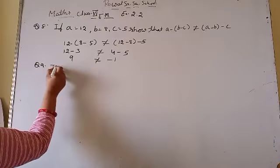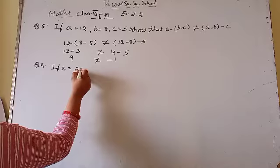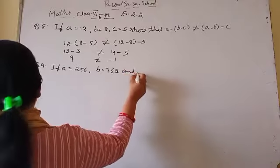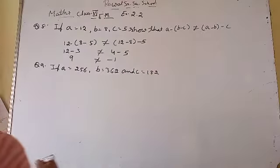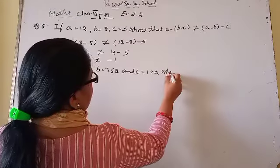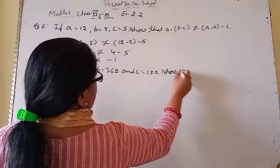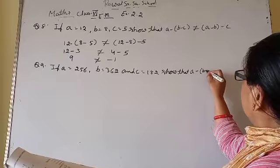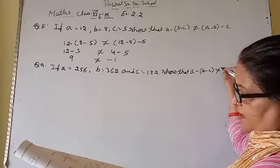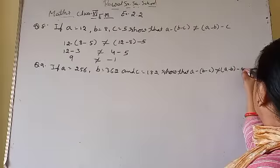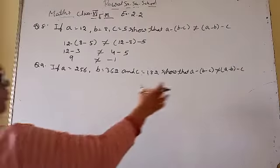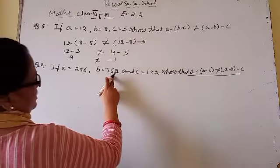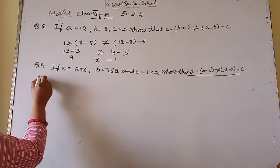Question number 9: If A is equal to 256, B is equal to 362 and C is equal to 182. Show that A minus (B minus C) is not equal to (A minus B) minus C. उसी तरीके से जो values दी गई हैं वो रख दो — A की जगह 256, B की जगह 362, और C की जगह 182.